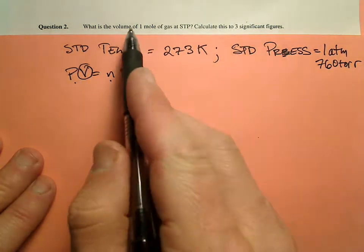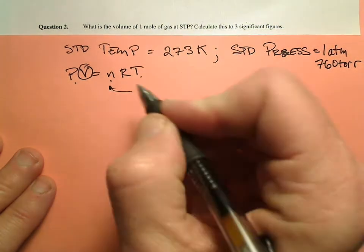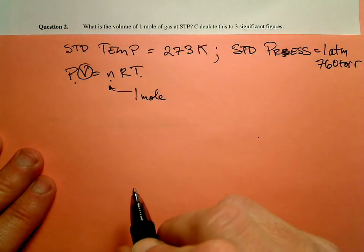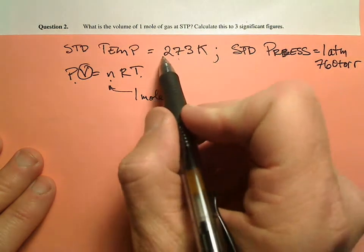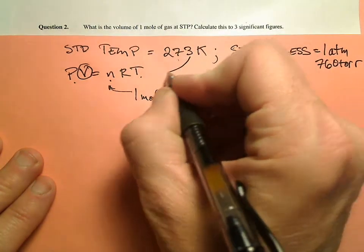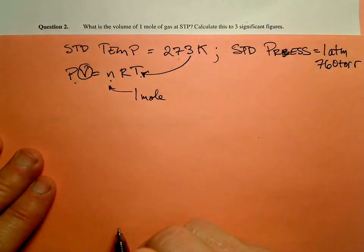Well, what do we know? Oh, we know the number of moles. It says one mole of gas. Okay. Do we know the temperature? Oh, yeah. Look at that. Standard temperature. It's STP. So standard temperature is 273 kelvins. So that's T.